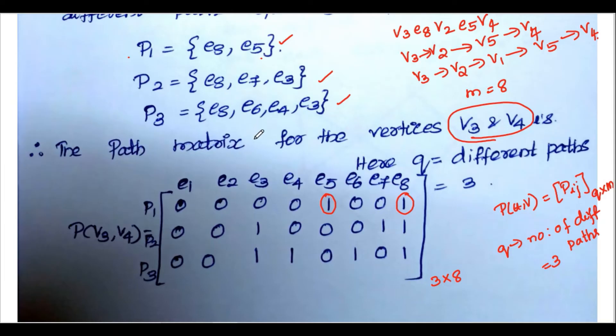For the third path, we have e3, e7, e8, so correspondingly e3, e7, e8 have 1 and remaining places 0. For p3, the third path contains e3, e4, e6, e8, so corresponding four places get 1 and remaining four places get 0. Hence, the order of the matrix is q by m, that is 3 by 8. Like this we can construct a path matrix for different vertices also.